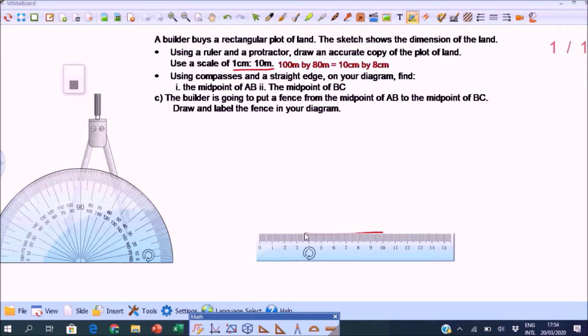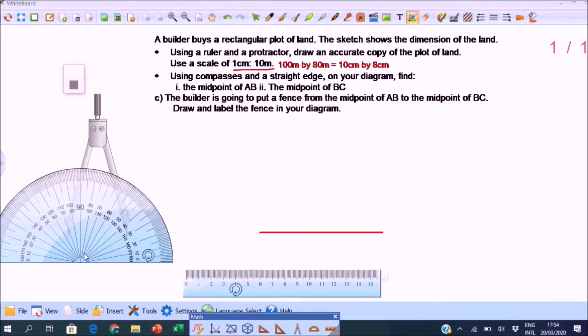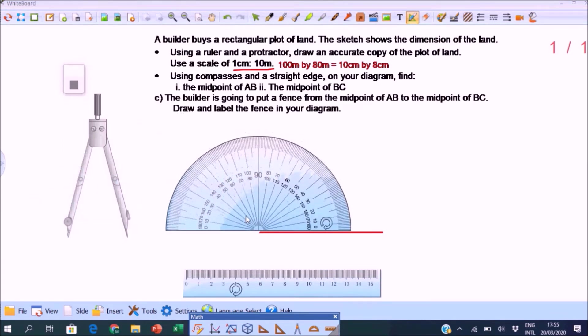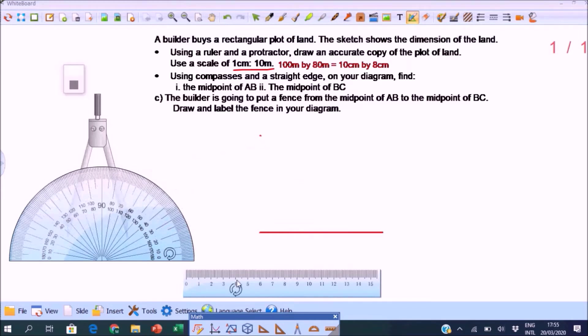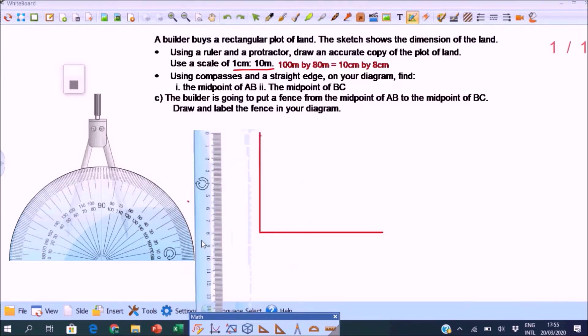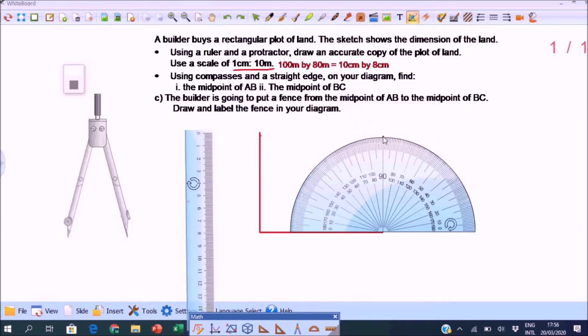So that's 10 cm. And then use your protractor to draw 90 degrees. The center of your protractor should be at the end of one line. Mark it. Then use your ruler. Draw 8 cm side. Do the same on the other side. That's 90 degrees. Mark it. Draw 8 cm.